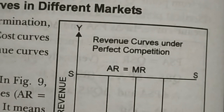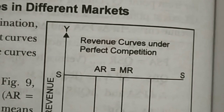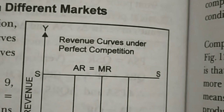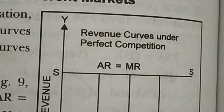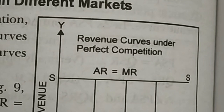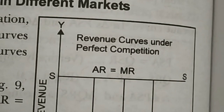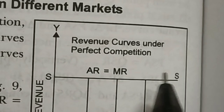This is the revenue curve under perfect competition. The price is the same for all commodities — commodity one, commodity two, commodity three, commodity four — all have the same price. Since output is increasing but there is no change in price, the revenue curve will be a horizontal straight line. Price will be the same, and so will MR. AR equals MR and is represented by a horizontal line.